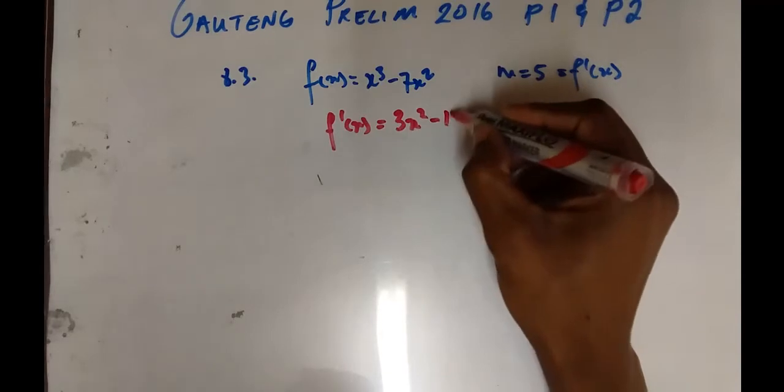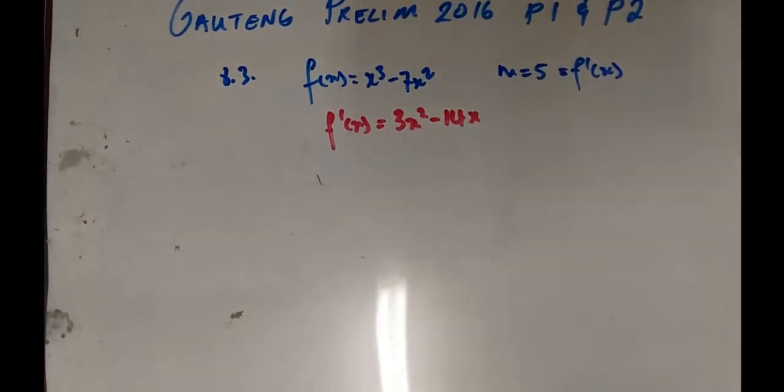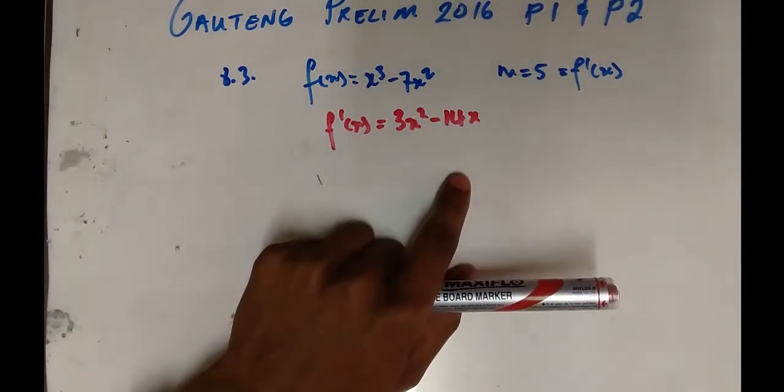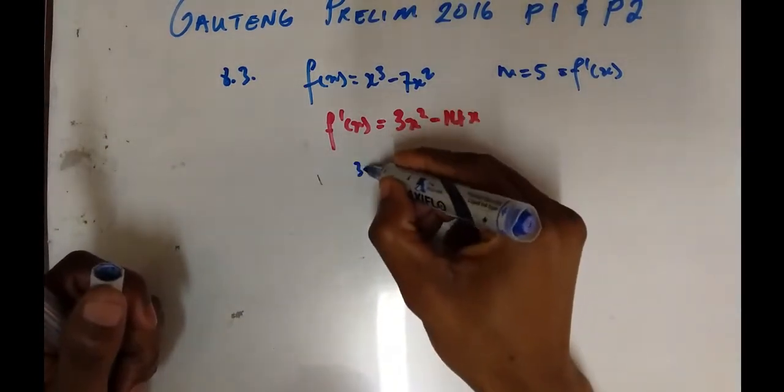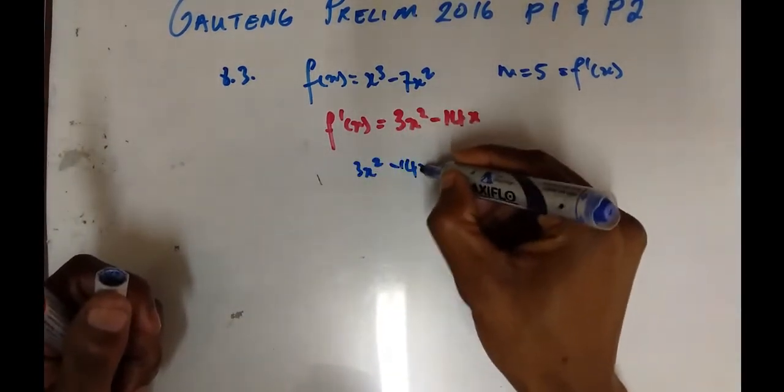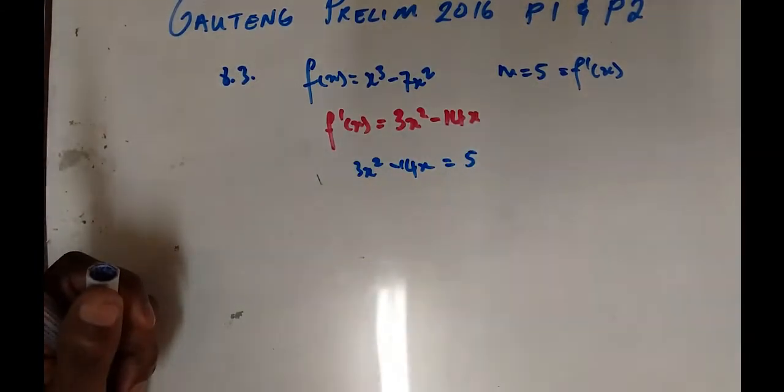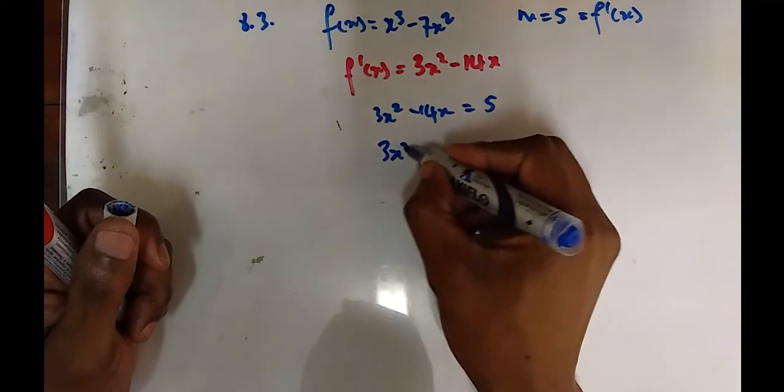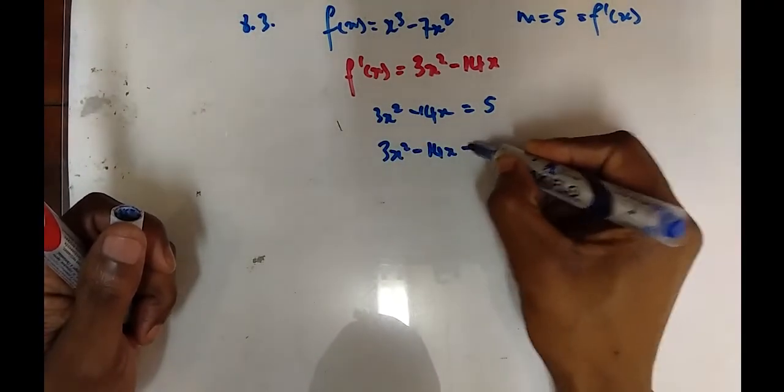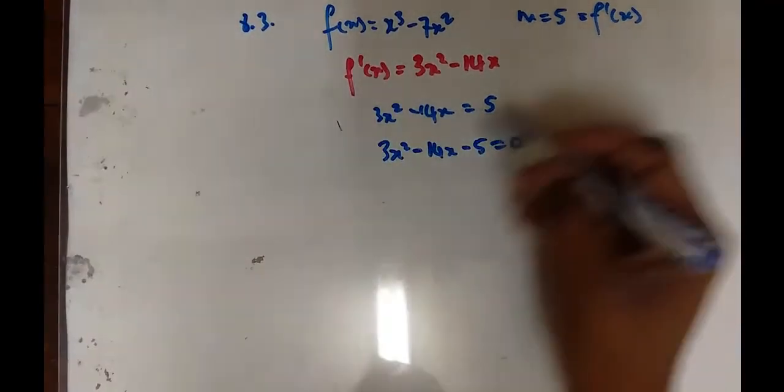This equals the gradient, which is 5. Therefore, 3x² - 14x = 5. We're going to solve for x from here. Rearranging: 3x² - 14x - 5 = 0.